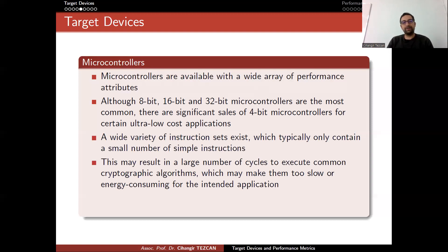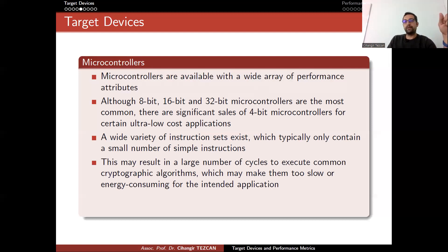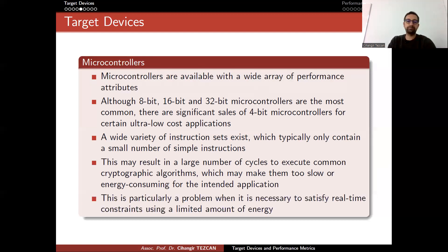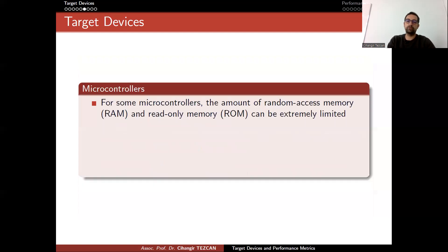Some devices might not have the AND operation or XOR operation, and maybe some basic arithmetic operations might not exist. This may result in a large number of cycles to execute common cryptographic algorithms, which may make them too slow or energy-consuming. For instance, consider shift operations — if your device doesn't have a shift instruction, an algorithm that performs shift operations might run very slowly. This is particularly a problem when satisfying real-time constraints using a limited amount of energy.